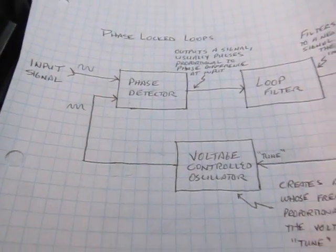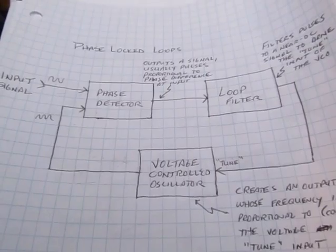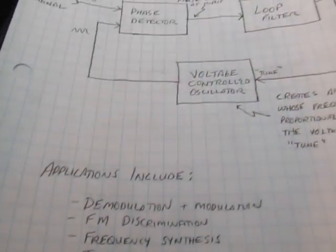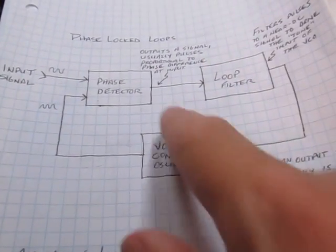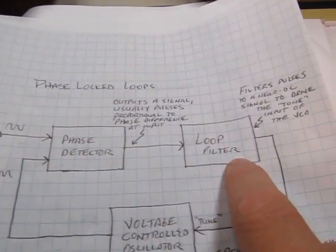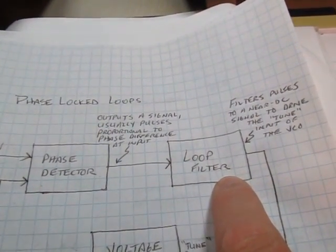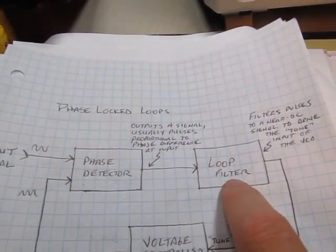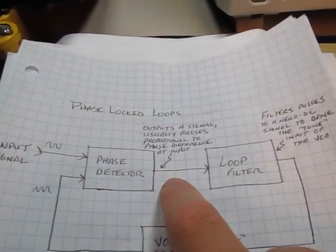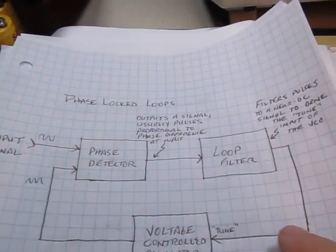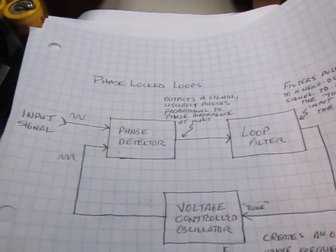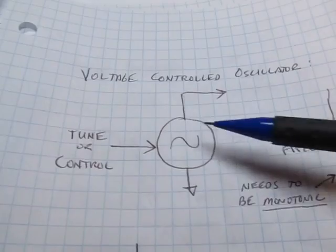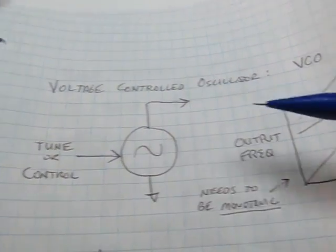So that's how the loop works — it's really quite simple. The loop filter is really nothing more than a simple low-pass filter; in many cases it might be a simple RC filter. Its job is to take the pulses out of the phase detector and convert them into a control voltage to control the VCO. The VCO is simply an oscillator whose frequency can be changed by some external voltage.